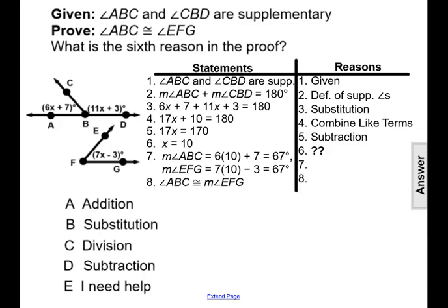Given the information that angle ABC and angle CBD are supplementary, and that we're trying to prove that angle ABC is congruent to angle EFG, what is the sixth reason in the proof, given all the statements and the diagram?